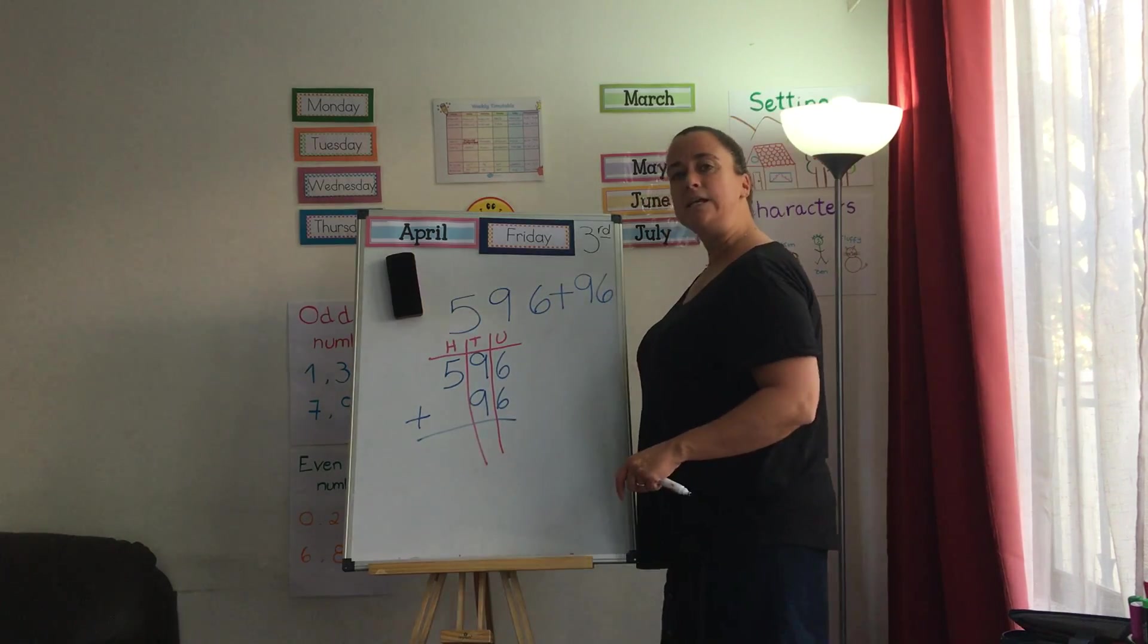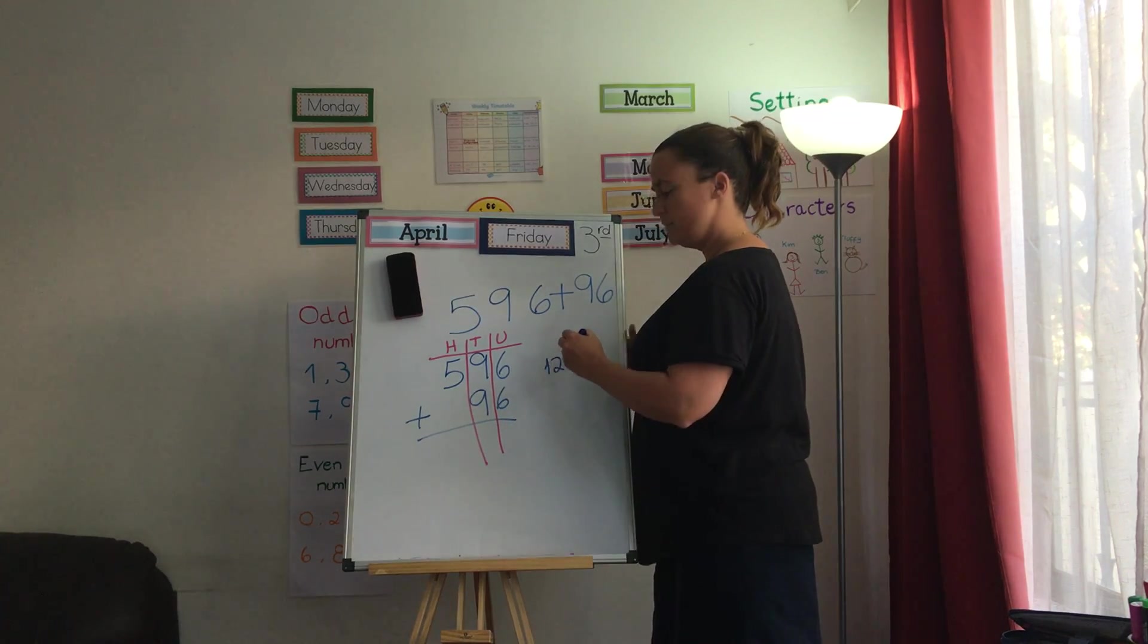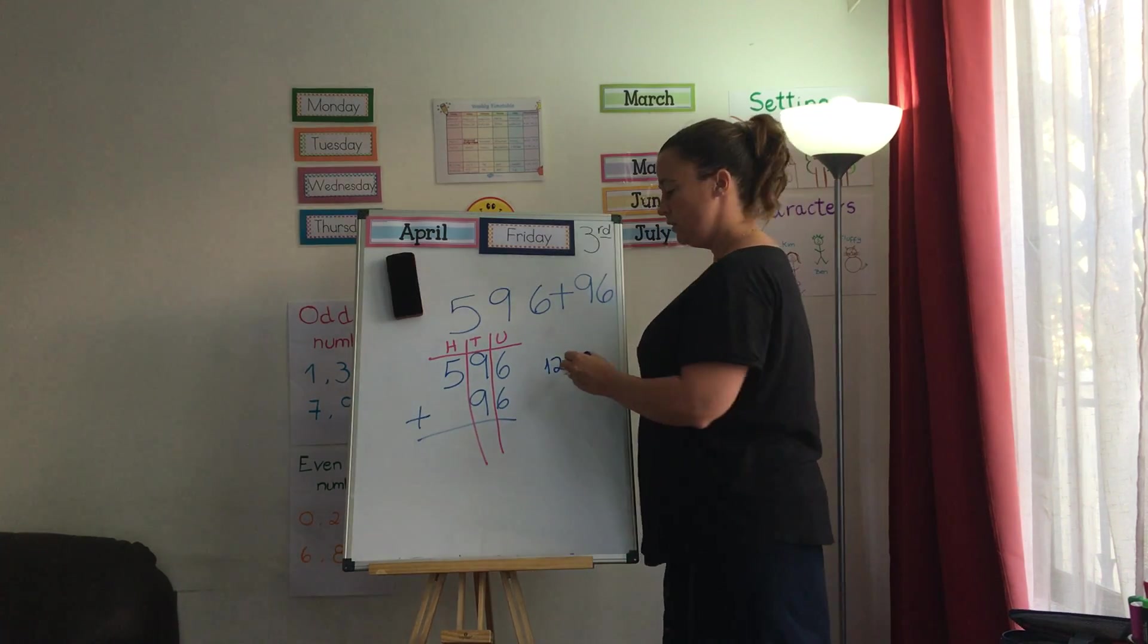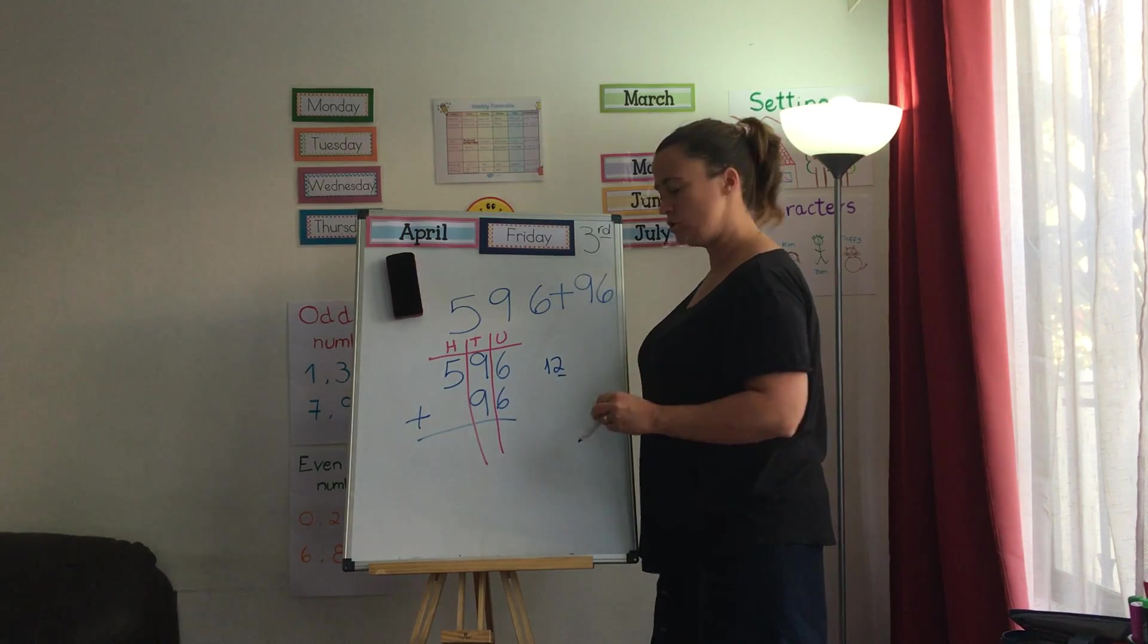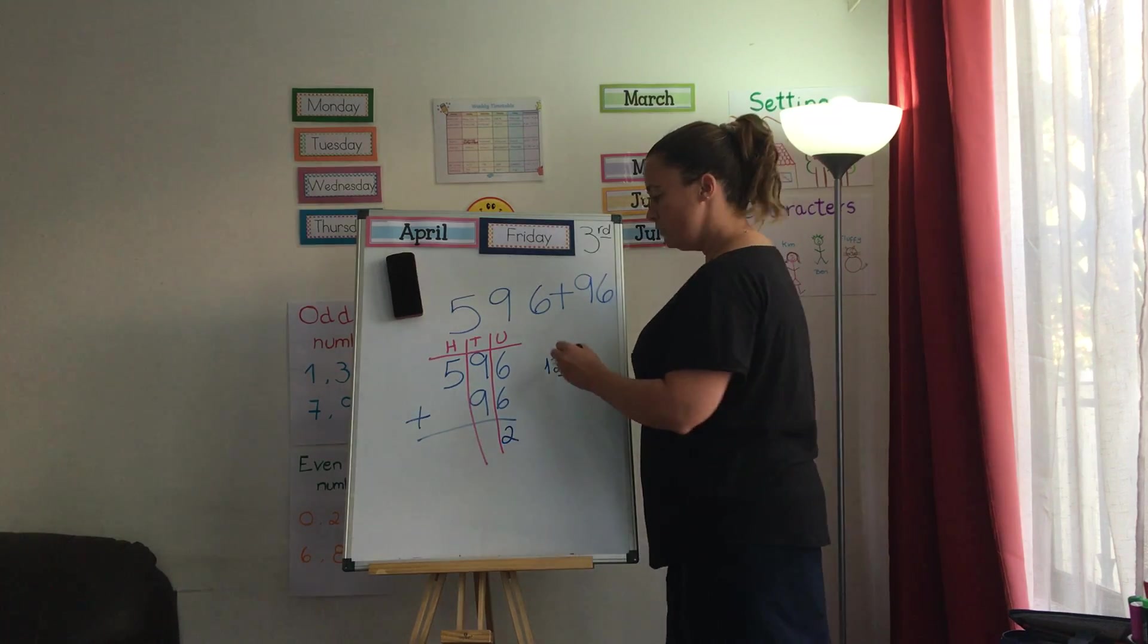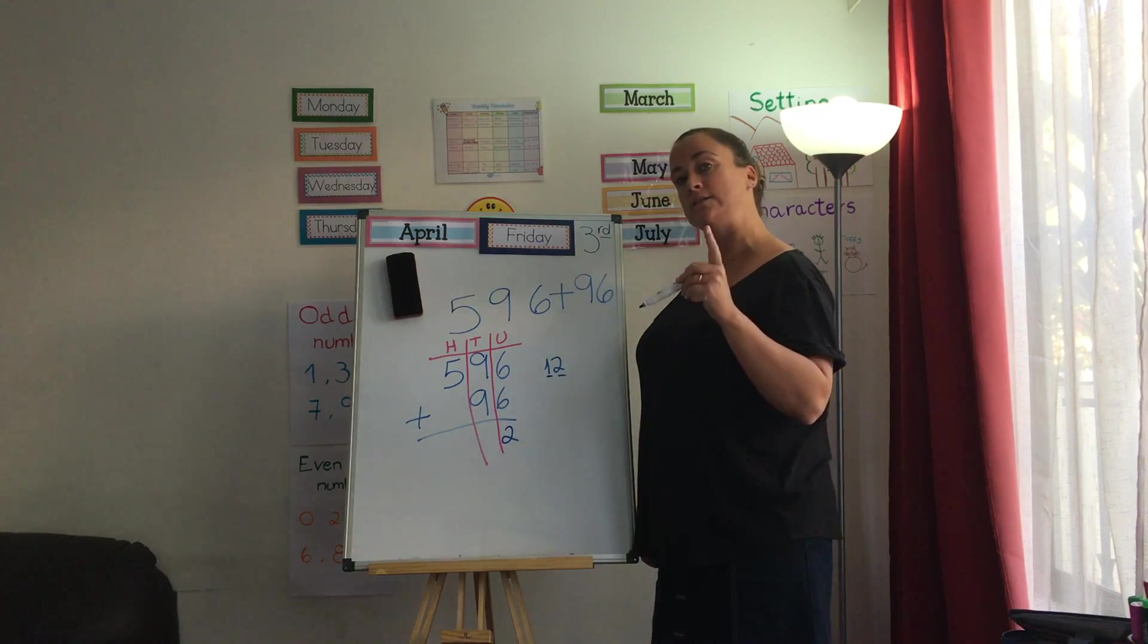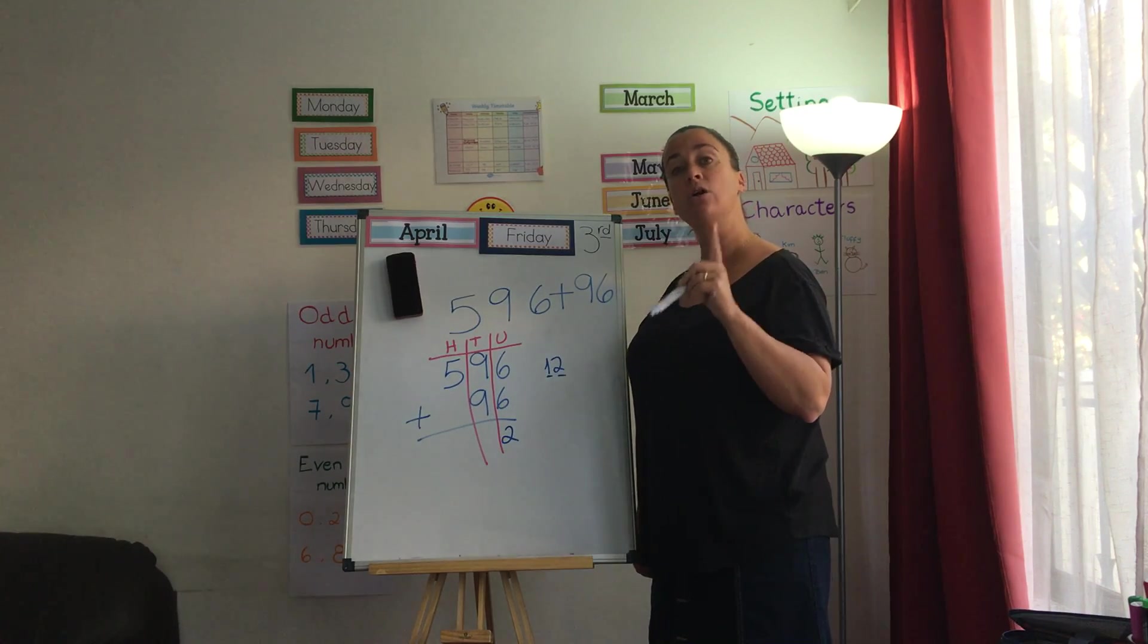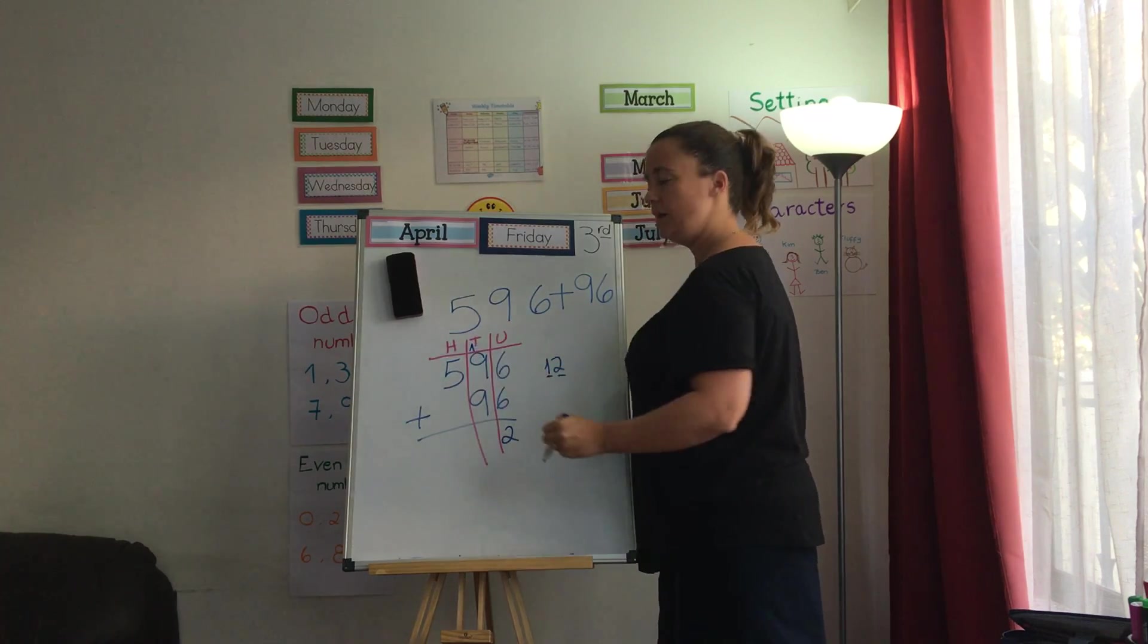6 plus 6 is 12. Good. Where do I put my 1s, my units? Good job. Under the unit column. What about my 10s one? Well done. In my 10s column, but at the top.